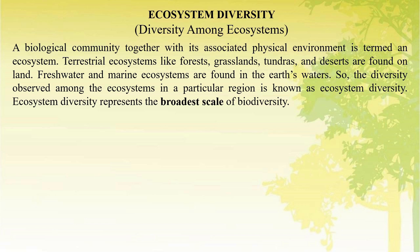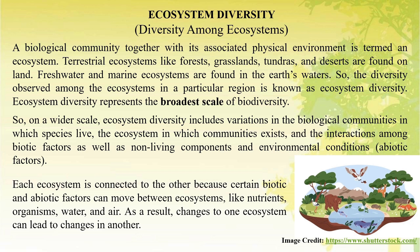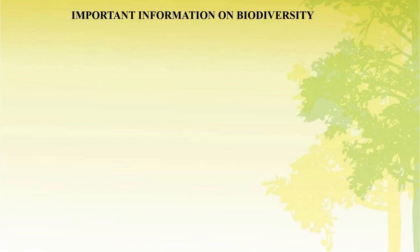Ecosystem diversity represents the broadest scale of biodiversity. On a wider scale, ecosystem diversity includes variation in the biological communities in which species live, the ecosystems in which communities exist, and the interaction among biotic factors as well as non-living components and environmental conditions — that is, abiotic factors. Each ecosystem is connected to others because certain biotic and abiotic factors can move between ecosystems, like nutrients, organisms, water, and soil. As a result, changes to one ecosystem can lead to changes in another.